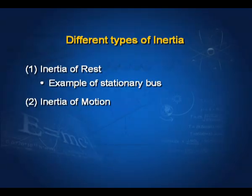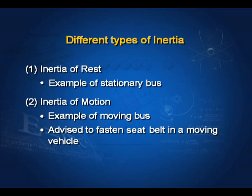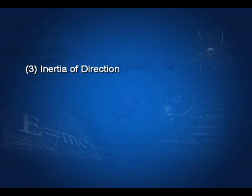The second type is inertia of motion, which states that if an object is in the state of motion it tries to remain in motion. For example, if you are standing in a moving bus and the driver suddenly applies brakes, your lower body slows down but your upper body, which was in motion, continues to be in motion. As a result you may fall in the forward direction. This is the reason you are advised to fasten the seat belt in a moving vehicle.